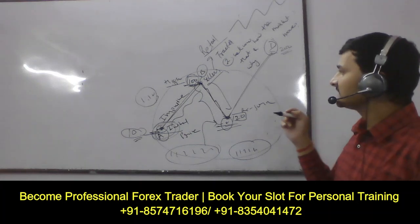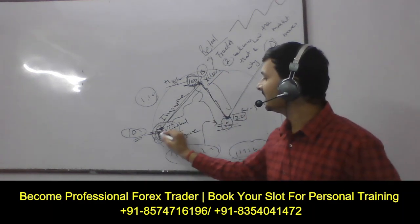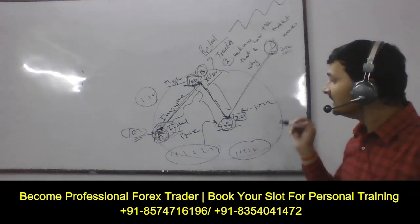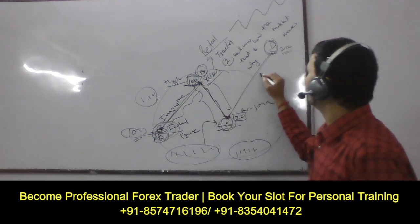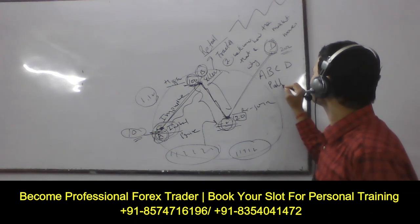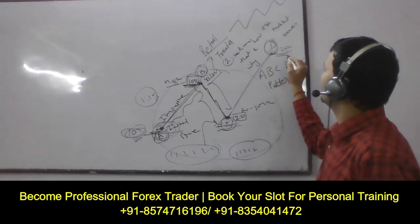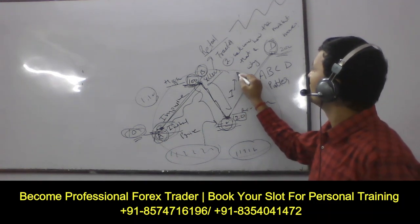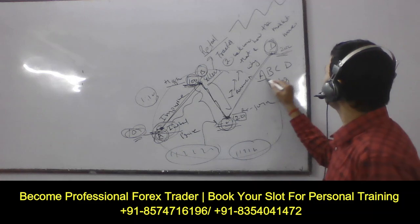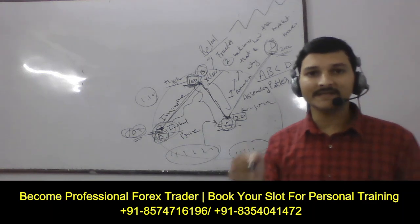Now, what is the benefit of giving these points the name A, B, C, D? All these points together will be called the A, B, C, D pattern. We can see that A was at 10, C was at 200 — the numbers are increasing one by one. It means the market is ascending, moving in an upward direction. That is why the whole name will be the A, B, C, D ascending pattern.